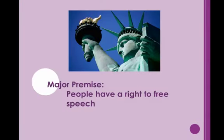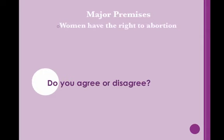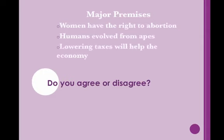The key to using deductive reasoning is to make sure that your audience agrees with your major premise, and that your major premise is valid. When speaking to a group of U.S. citizens, you can be relatively sure that they would agree with the assertion that people have a right to freedom of speech. They may not, however, agree that women should have the right to an abortion, that humans evolved from apes, that lowering taxes will help the economy, or that a vegan diet is good for you. So it is a good idea to have plenty of evidence to support your major premise. You may also need to have evidence to support your minor premise, because the specific case you cite may not be self-evident.